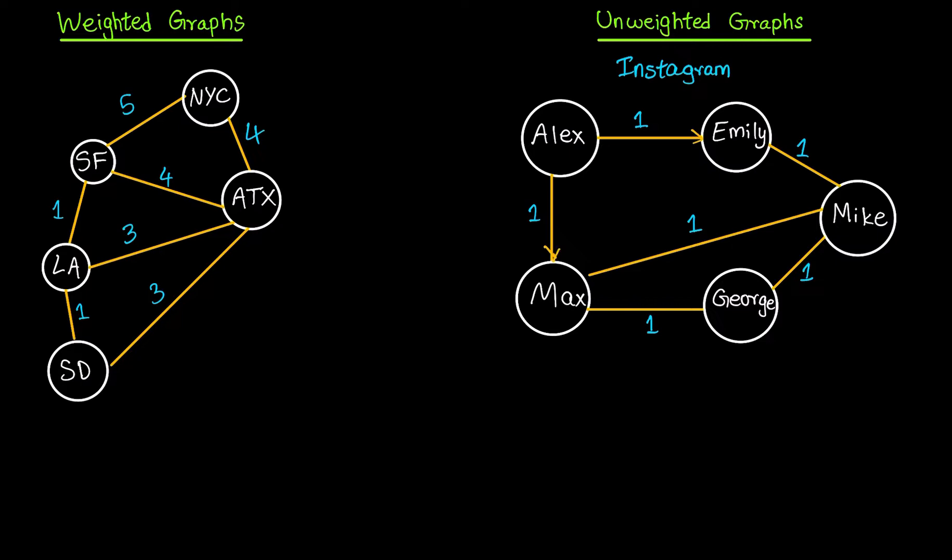Let's say Alex is following Max and Max also follows Alex, and Max is following Mike but Mike doesn't follow Max back. George follows Mike and Mike does not follow George back. Let's assume Mike just doesn't want to follow anybody. Emily follows Mike but Mike doesn't follow Emily back. This is the way we can represent Instagram, the way following works in Instagram using directed graphs. Thank you for watching and hope to see you in the next video.